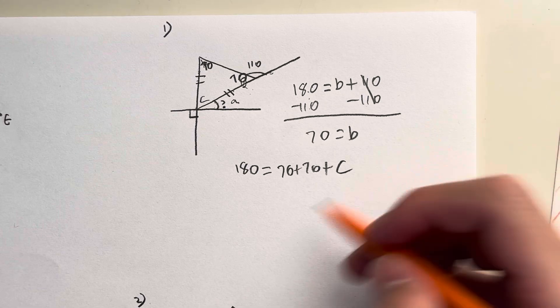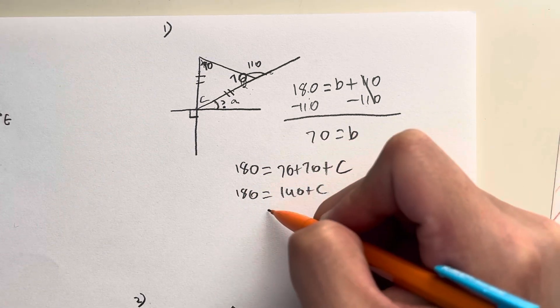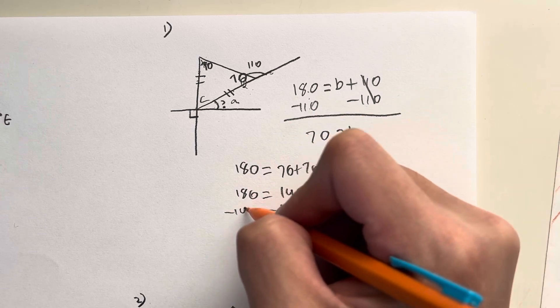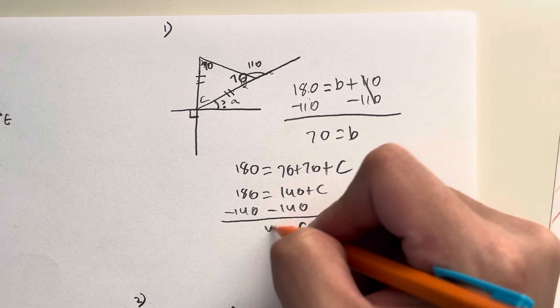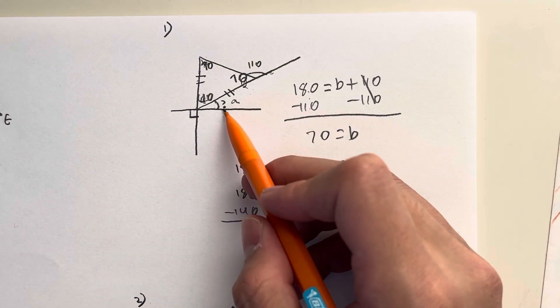And then I could solve for C. So 180 is equal to 140 plus C, minus 140 on both sides, and finally leaving me with C is equal to 40 degrees. Now I have 40 degrees right here but how do I get the value of A?